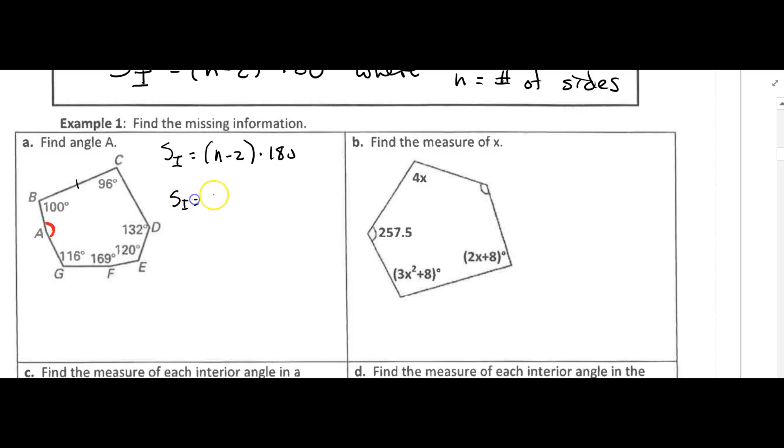So the sum of the interior angles is going to be 7 minus 2 times 180. That's going to be 5, and that will be 900 degrees.